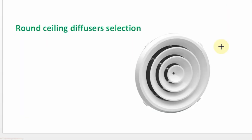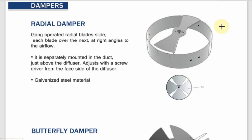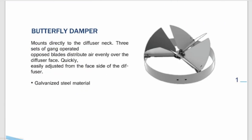How to select a round ceiling diffuser. These are the commonly used volume control dampers which we use with a round ceiling diffuser. One is the radial type and another one is the butterfly type.